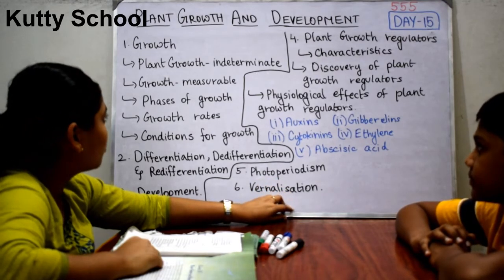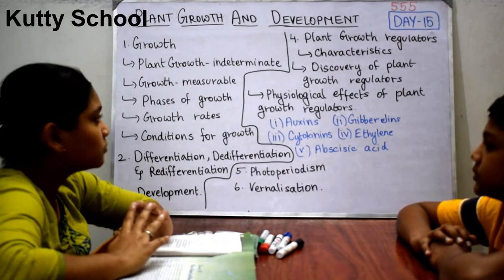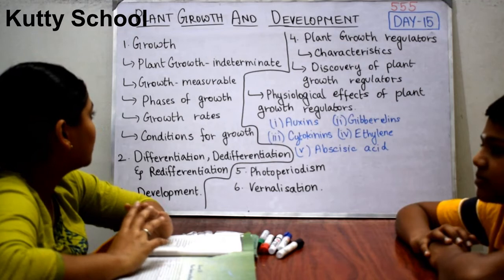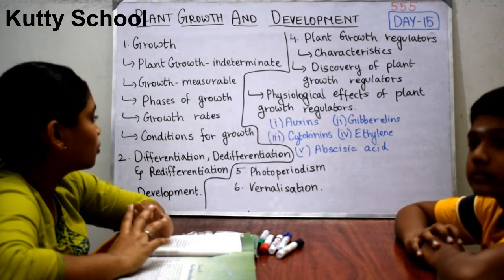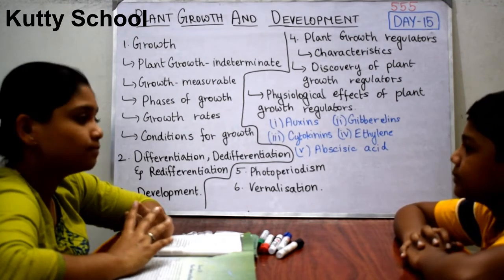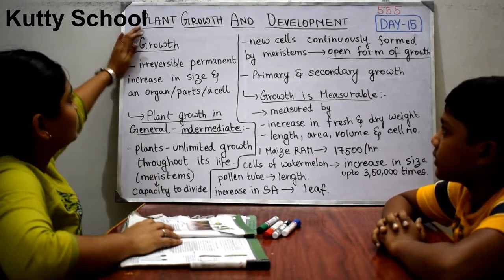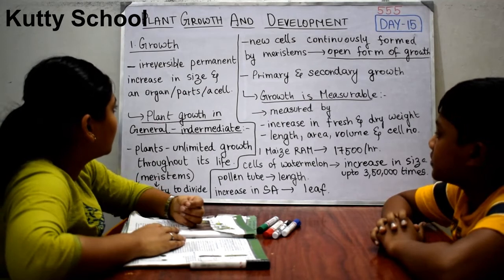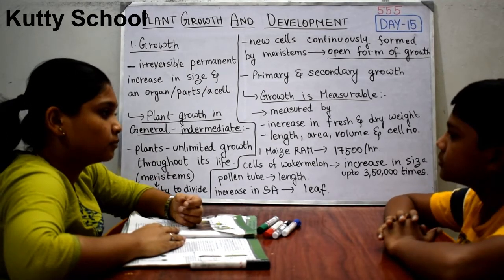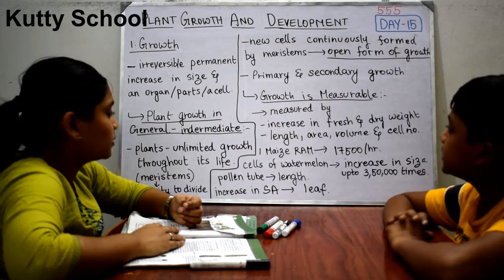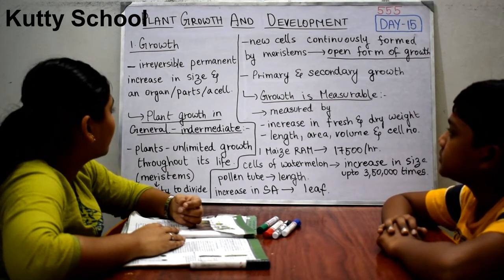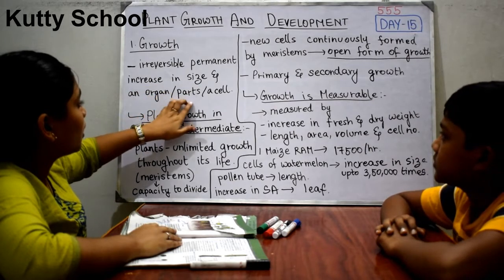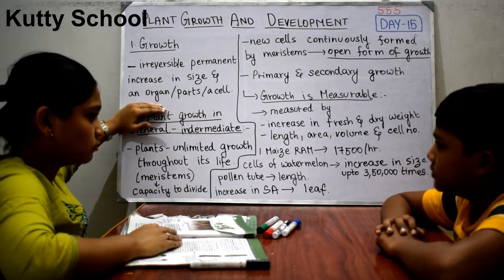First we will go with the first topic which is growth. Growth is the irreversible permanent increase in size. It cannot be reversed. Size can increase in an organ, or parts, or a cell — all of these can grow.